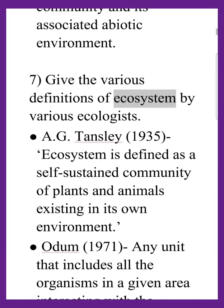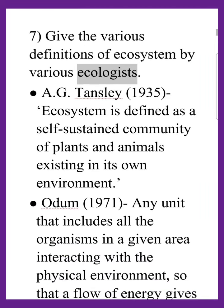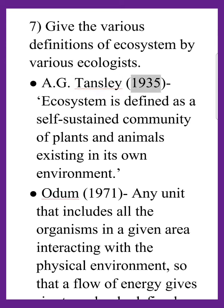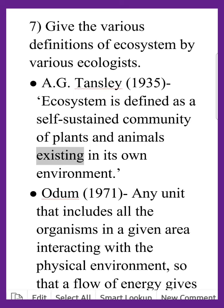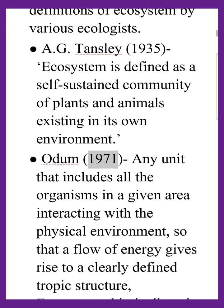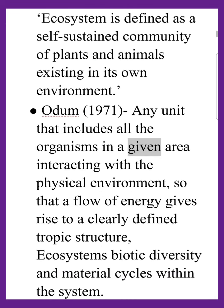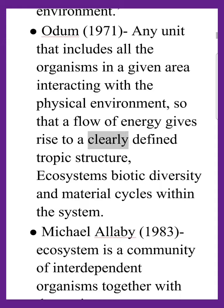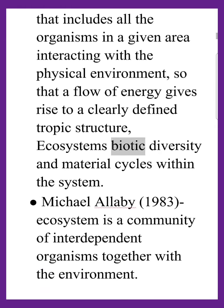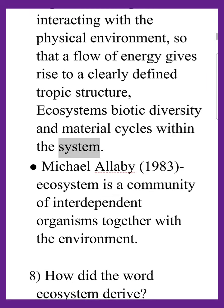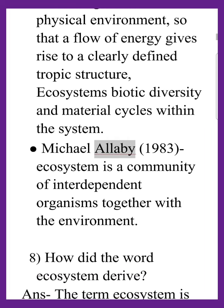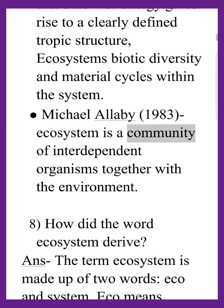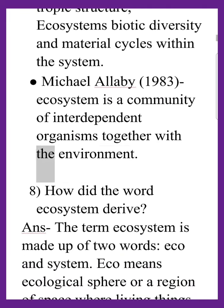Give the various definitions of ecosystem by various ecologists. A.G. Tansley, 1935: Ecosystem is defined as a self-sustained community of plants and animals existing in its own environment. O.D., 1971: Any unit that includes all the organisms in a given area interacting with the physical environment, so that a flow of energy gives rise to a clearly defined trophic structure, biotic diversity, and material cycles within the system. Michael Alibi, 1983: Ecosystem is a community of interdependent organisms together with the environment.